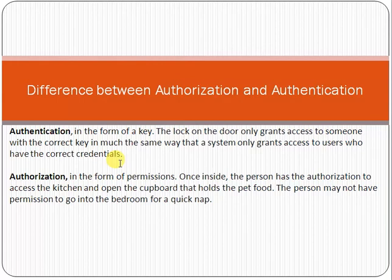So that is the main difference: authentication means that if you have the key you can enter the house, but authorization means you can only go into the kitchen and not into the bedroom. Authentication means you get access; authorization means you get the appropriate privilege or access — the appropriate permissions.